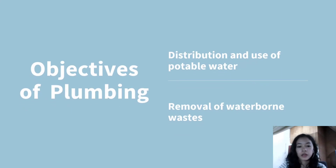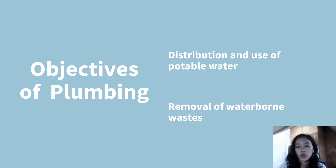There are two primary objectives of plumbing. First, it's for the distribution and use of potable water — the water that is delivered to our homes. And second, is for the removal of water-borne waste — the water that has already been used. By the way, we are focused on water as our fluid here, but plumbing is not limited to this because plumbing can also be used to convey any kind of liquid and gases.